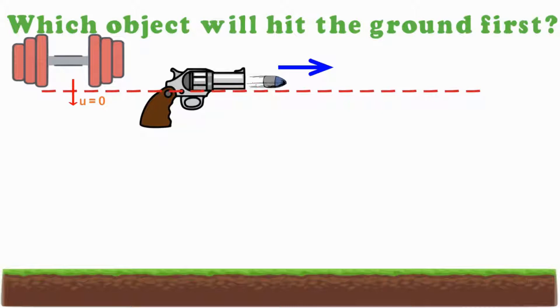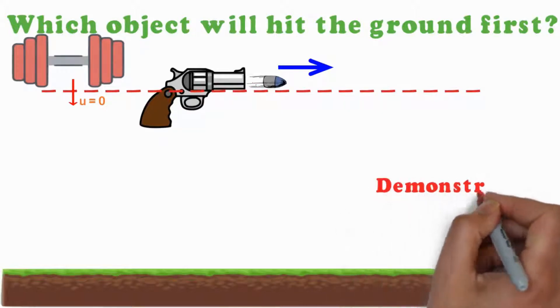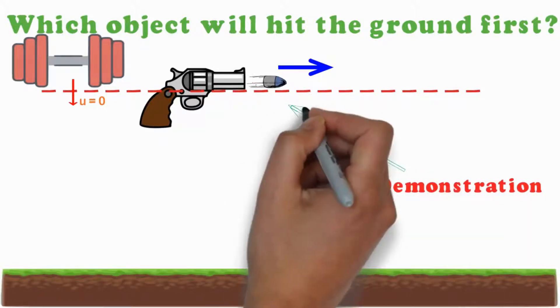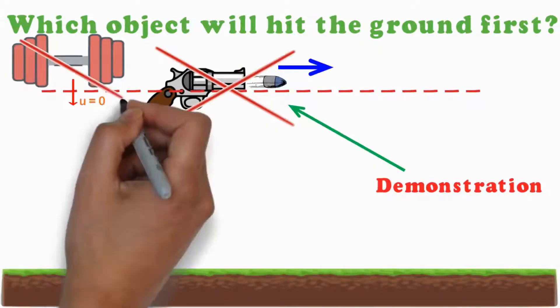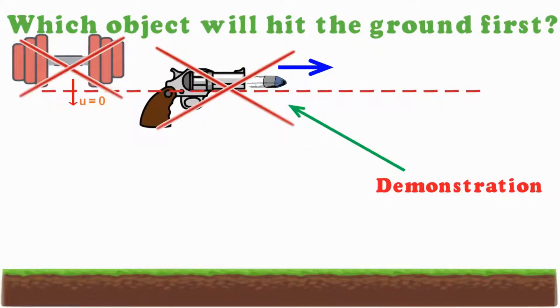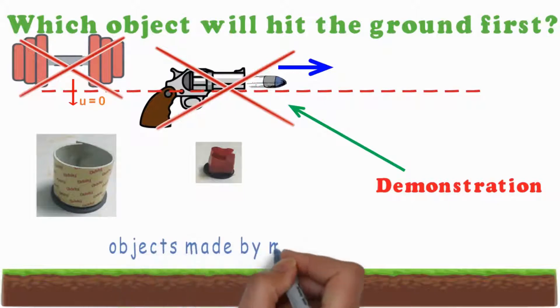To find out the answer, let us consider a small demonstration. As practically it is not possible to use a gun and dumbbell for demonstration, I am using these two objects similar to the bullet and dumbbell. These two objects have different mass, size, and shape.